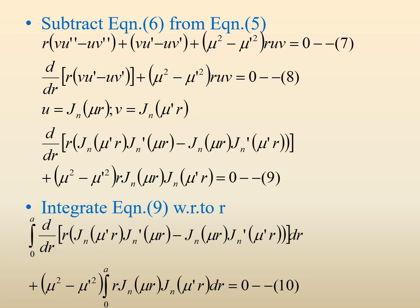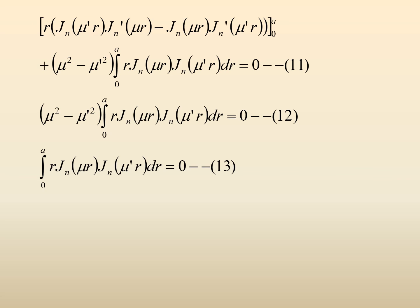Integrating with respect to r from 0 to a, the integral of d/dr[...] dr cancels by the fundamental theorem of calculus, giving [r · Jn(μ'r) · Jn'(μr) − Jn(μr) · Jn'(μ'r)] evaluated from 0 to a, plus (μ² − μ'²) times the integral from 0 to a of r · Jn(μr) · Jn(μ'r) dr = 0.